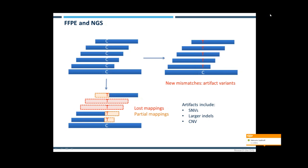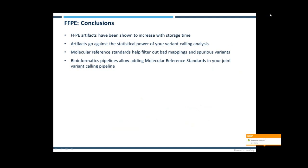In conclusion, recent work suggests that the quality of FFPE-derived NGS datasets can decrease according to storage time. Artefacts make you lose data — you lose statistical power in variant calling analysis and can compromise more complex analyses such as structural variant detection. Adopting molecular reference standards in your pipeline can greatly help you filter out these artefacts.